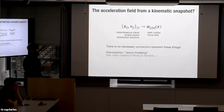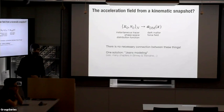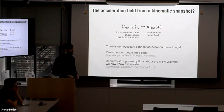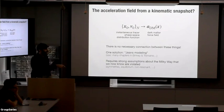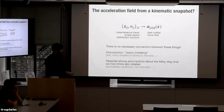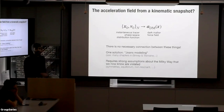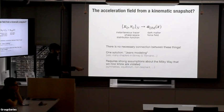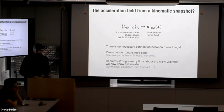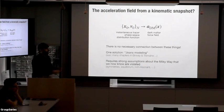One solution is to use something like Jeans modeling, where you make very strong assumptions about the Milky Way — like the symmetry properties or the equilibrium state, as you may recall from many chapters in Binney and Tremaine devoted to this topic. But we know that all of the assumptions going into methods like this are violated in the Milky Way. We don't actually know the symmetry properties, we see signatures of disequilibrium, and so these assumptions will bias our inferences.